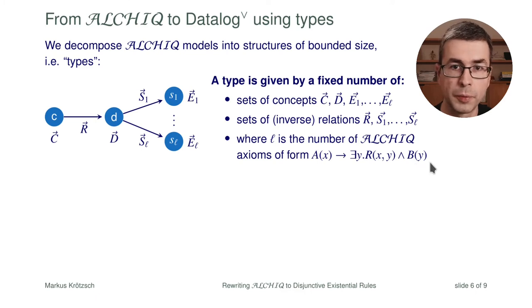The S1 to SL are actually just to provide necessary successors that the logic requires to exist. Because for every rule of the form A of X implies there exists Y, R of X Y, B of Y, which would be an existential axiom in the description logic as well, we will have one such successor. So if you have a fixed ontology given, you have a fixed number of rules of this form and you just look at types where for every such rule you have already one representative that describes how this rule would be satisfied.